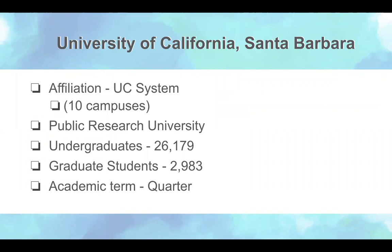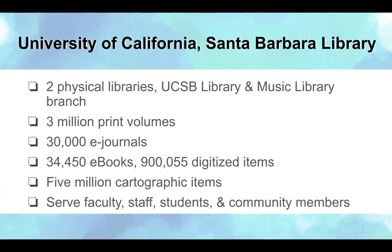The University of California Santa Barbara is affiliated with 10 campuses in the UC system. We have undergraduates from various backgrounds — around 26,000 — and this is a situation that warrants the need to look into affordable learning materials. We have the UCSB main library and the music library with various resources and services including course reserves, but textbooks are not always enough for all our students — again, a situation that warrants the need to look into alternative affordable learning resources.